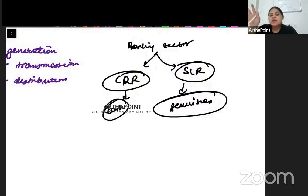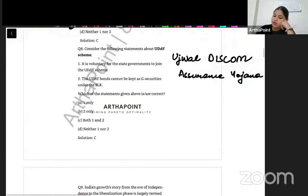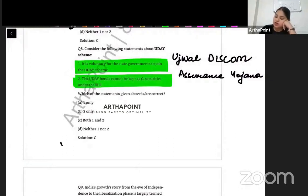This is about it. These two points. Otherwise, I will suggest you to go ahead and read about these Uday Bonds in detail. Why they are launched on premium, what their cost is, whether state government issues them or central government issues them, what is Uday 2.0, which talks about installment of smart prepaid meters, making coal available in the short run. So these things, you should go ahead and research about it. But as of now, both these options are correct, that it is voluntary for state governments to join Uday scheme, and it cannot be kept as G securities. So C is the correct answer, both 1 and 2.